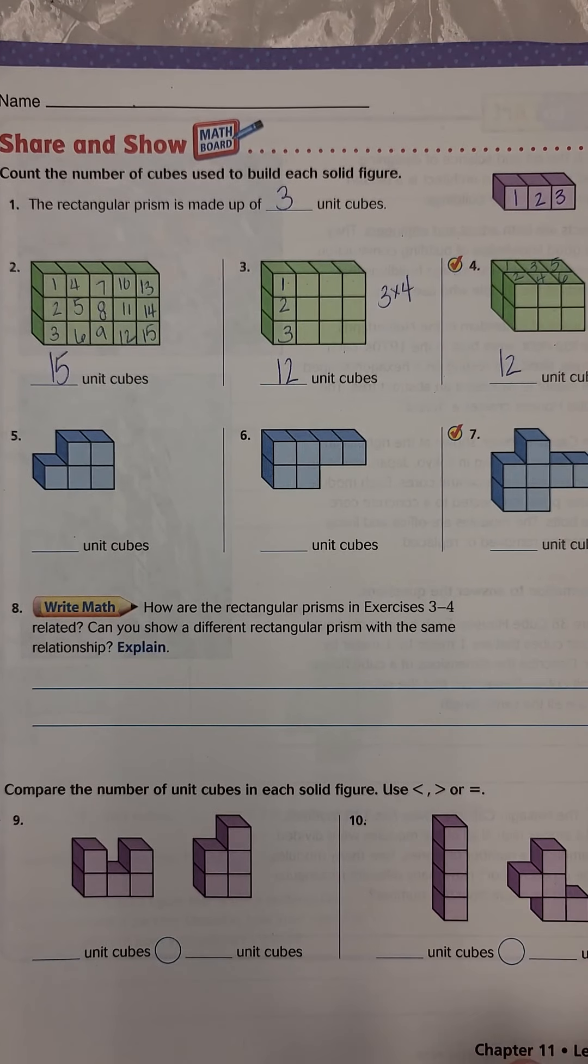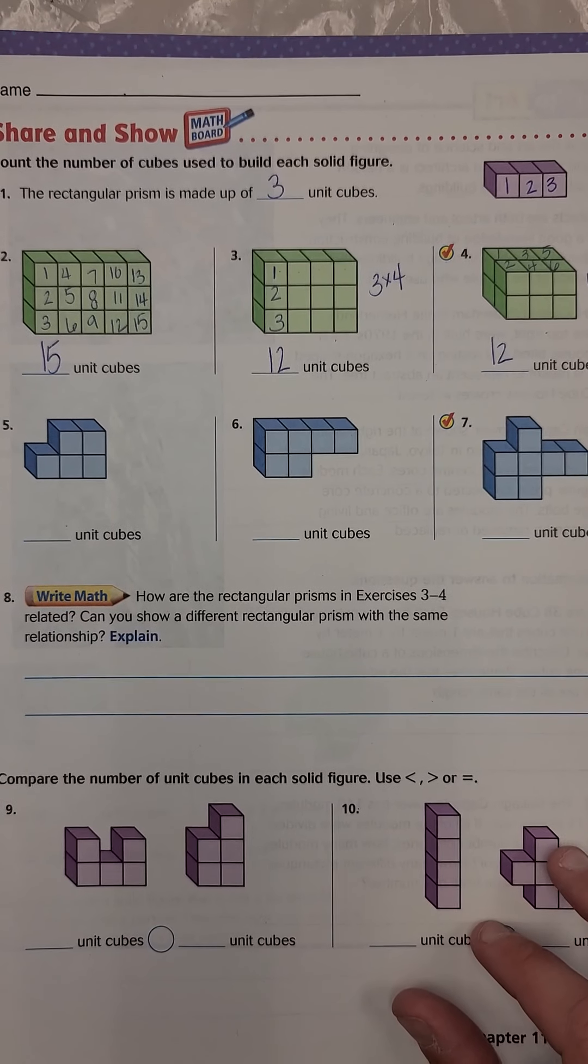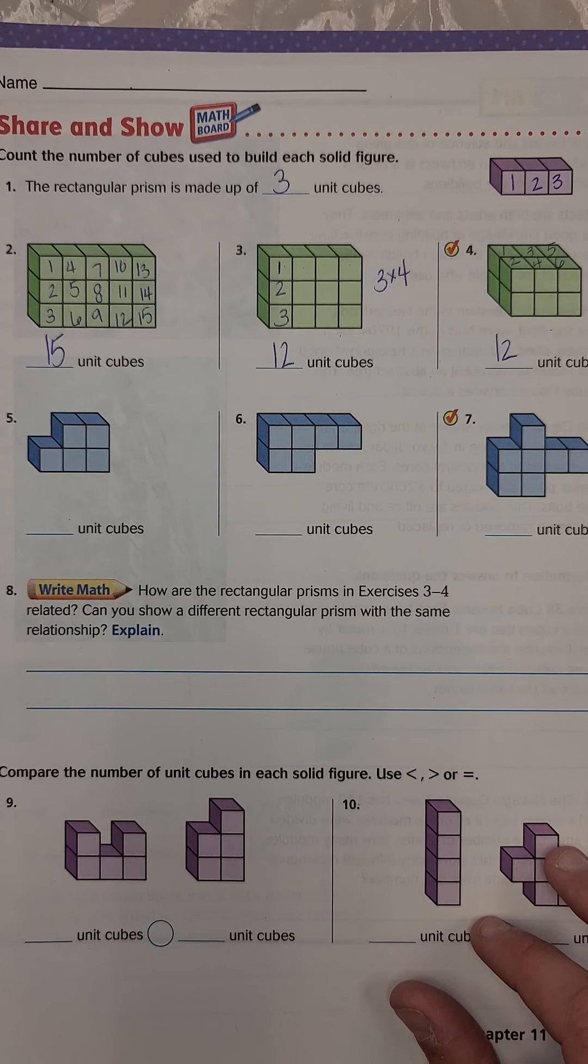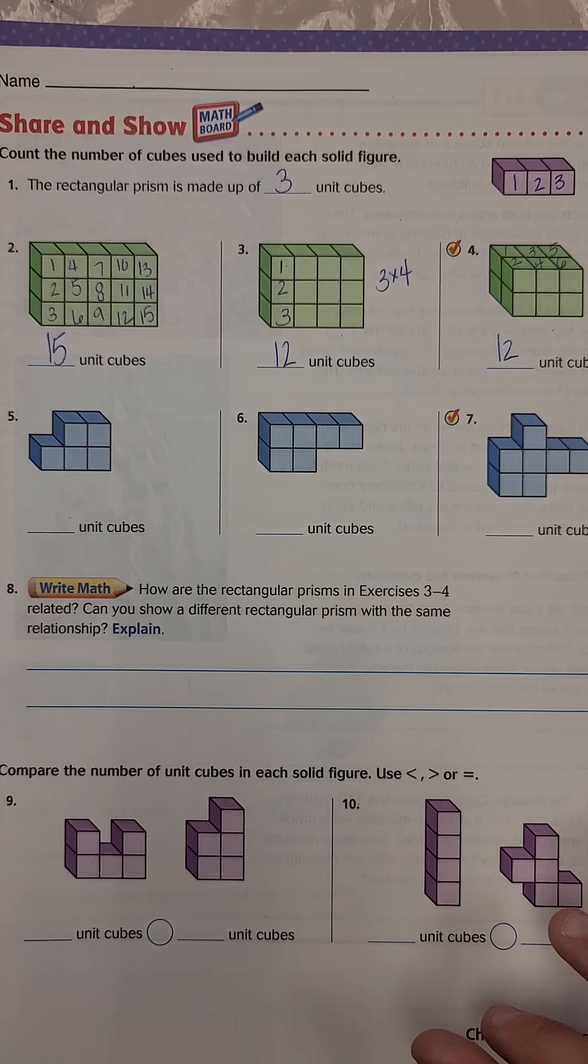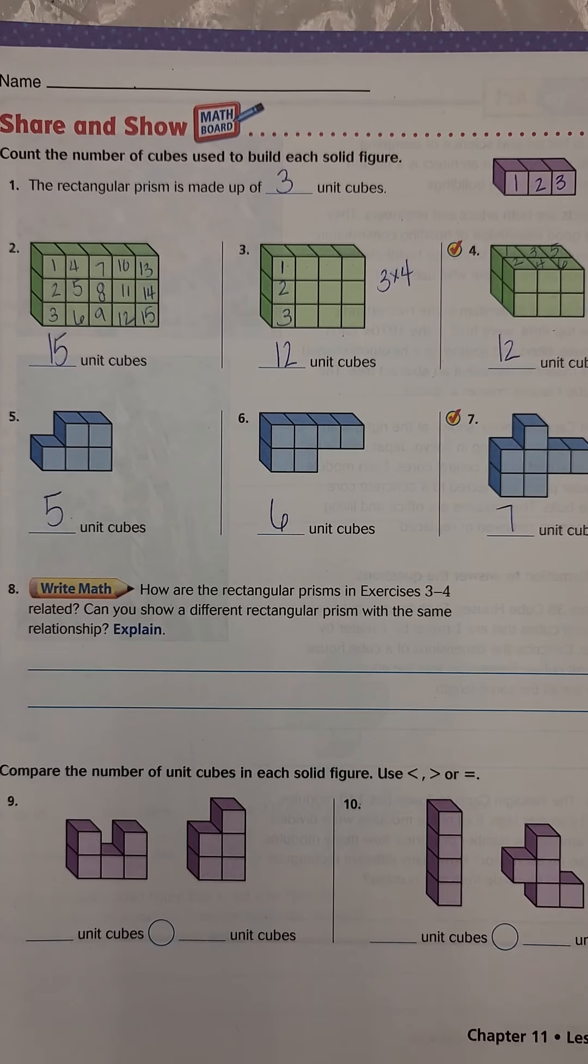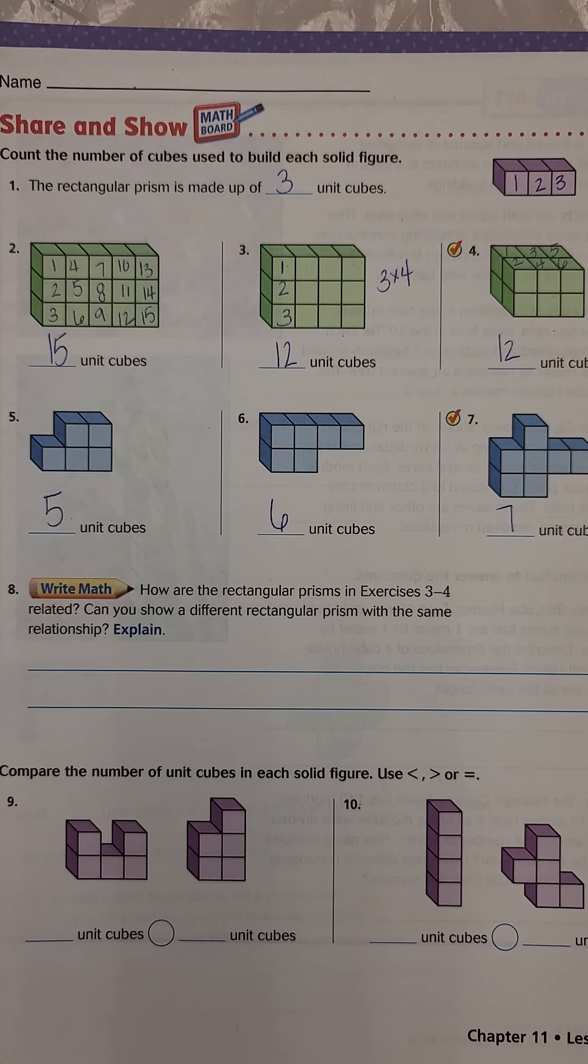So now what I want you to do is I want you to do five through seven on your own. Go ahead and do that so that you can check your work, pause the video, and then check. Hopefully you said five was five, six was six, and seven was seven. If you did, yay!